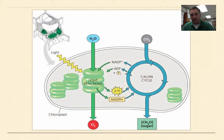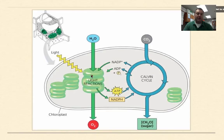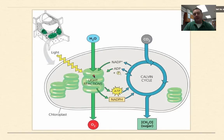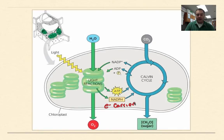Let's walk through this diagram. First, light hits the chlorophyll on the thylakoid membranes. The excited electrons that pop off the magnesium are used to make two key molecules: NADPH, which is an electron carrier that carries high-energy electrons, and ATP. Both are produced using the energy from those excited electrons.